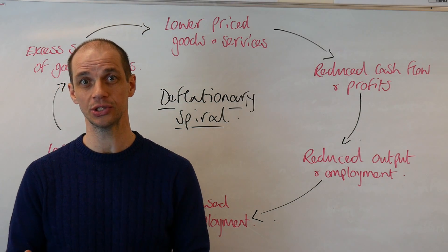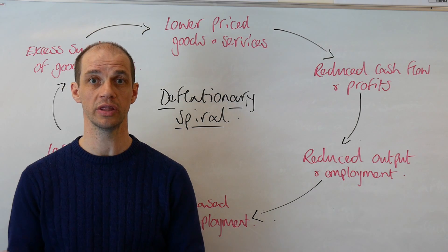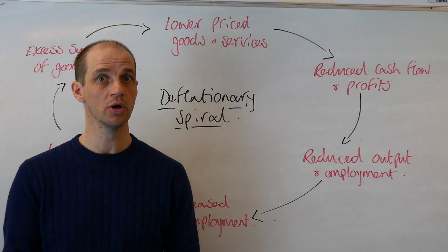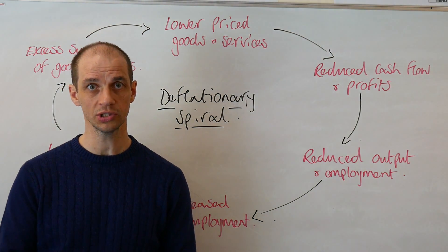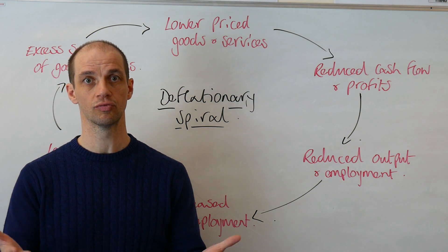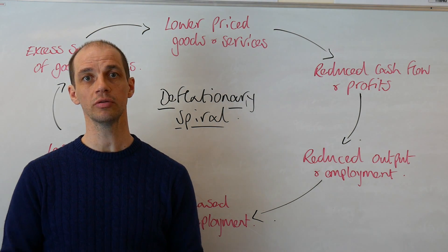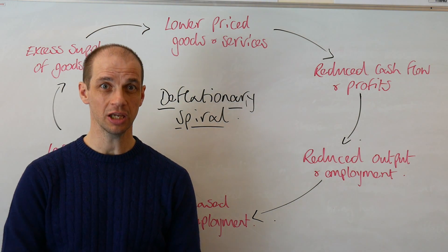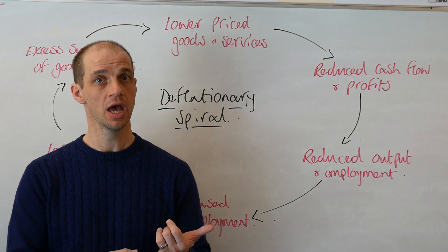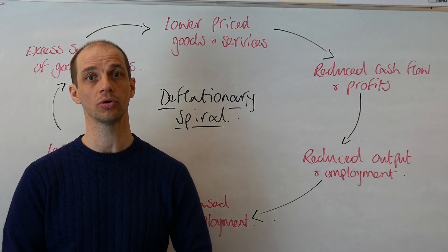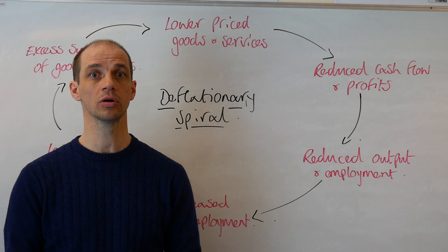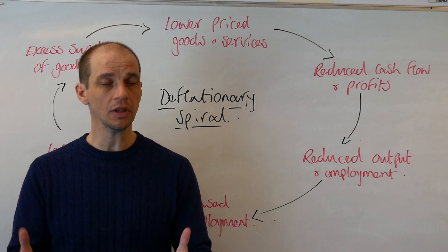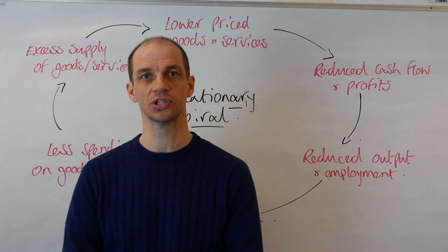Nevertheless there can be instances of good deflation. We've recently experienced one within the UK where oil prices were falling globally, and that meant prices at the petrol station fell. That was good news for households — their costs fell and disposable incomes in effect rose. Further to that, it was also good news for many businesses whose cost base reduced, particularly those such as the airline industry who would have much lower costs when oil prices fell. That wasn't anticipated to last long, and the underlying cause was really the volatility in the oil price. CPI has remained positive since then.